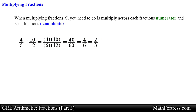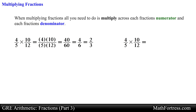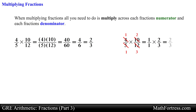We can also reduce the fraction first before proceeding with the multiplication step. For example, we can start by reducing the fractions across the multiplication sign — in other words, reduce the numerator of one fraction and the denominator of the other. The numerator 4 can be simplified with the denominator 12 since both are divisible by 4, so 4 simplifies to 1 and 12 reduces to 3. Similarly, the numerator 10 can be simplified with the denominator 5 since both have 5 as a common factor, so 10 simplifies to 2 and 5 simplifies to 1. By reducing first we multiply smaller numbers, giving us 1 over 1 times 2 thirds, which simplifies to 2 thirds.